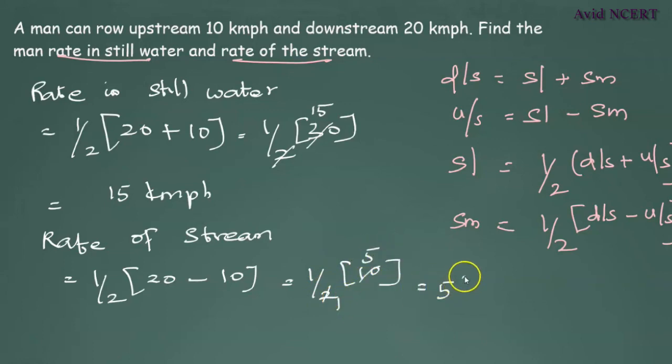So the rate in still water is 15 km per hour and the rate of stream is 5 km per hour.